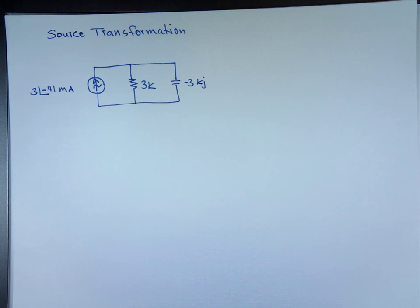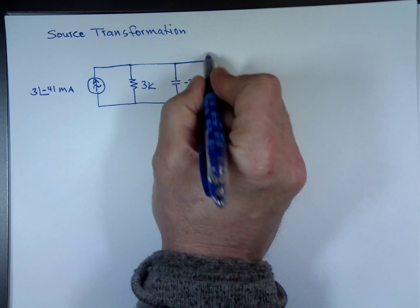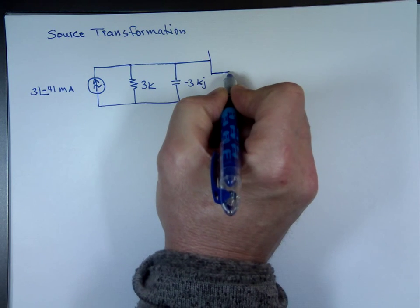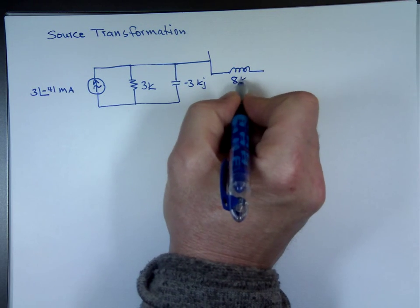Not joules, j, capacitor. I think in physics j is for joules. Inductor 8k.